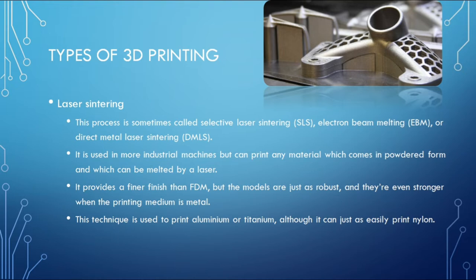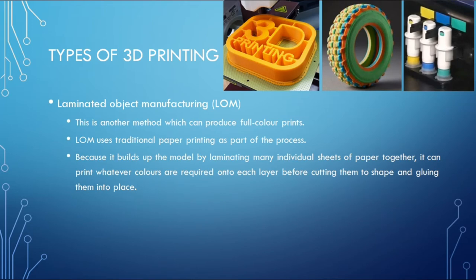The second method is laser sintering, sometimes called Selective Laser Sintering (SLS), Electron Beam Melting, or Direct Metal Laser Sintering. It is used in more industrial machines but can print any material which comes in powdered form and can be melted by a laser. It provides a finer finish than FDM but the models are just as robust, and even stronger when the printing medium is metal. This technique can print aluminium or titanium, as well as nylon.